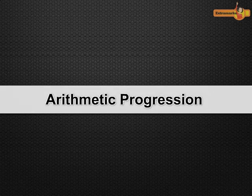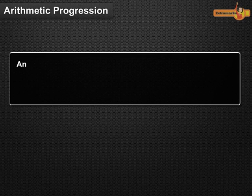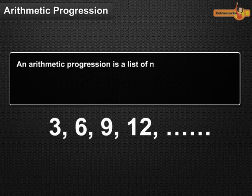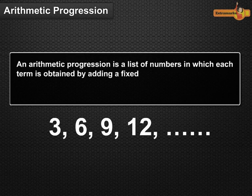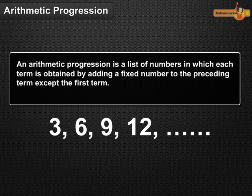Arithmetic Progressions. An arithmetic progression is a list of numbers in which each term is obtained by adding a fixed number to the preceding term except the first term. In short, we denote arithmetic progression as AP.